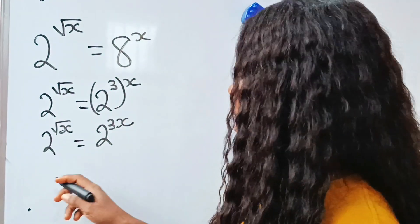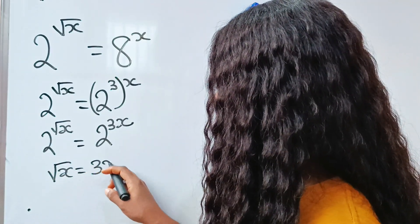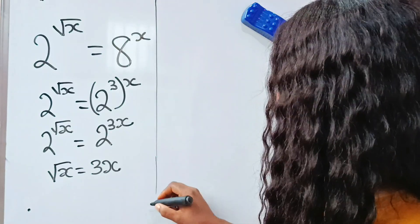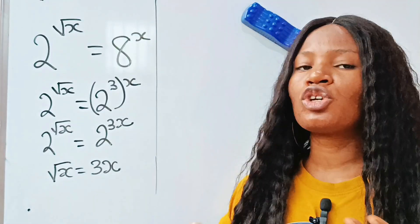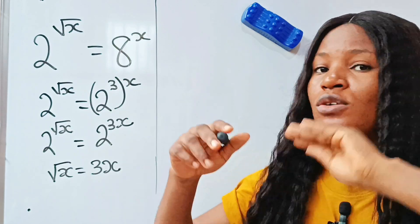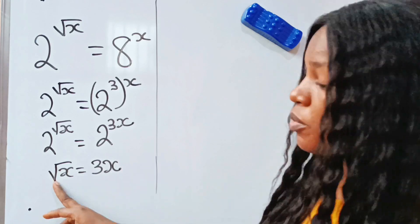So we can now write that root x is equal to 3x. Now another thing: anytime you have square root of anything, to remove that square root just square. If you have cube root, to remove the cube root just cube. So we are going to square both sides of this equation to remove this square root sign.